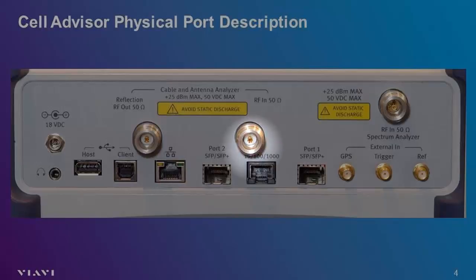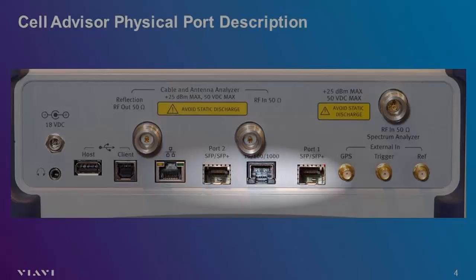Two ports, labeled SFP1 and SFP2, are located at the front of the instrument. The SFP ports accept small form-factor pluggable transceivers and are used to make optical measurements on CPRI links. CPRI, or Common Public Radio Interface links, are most commonly used to connect a baseband unit (BBU) and a remote radio unit (RRU). With these ports, you can decode the radio frequency signals received or transmitted from the base station, perform signal analysis on the baseband unit transmit, and emulate a baseband unit to control and test a radio independently. The network connection port located between the SFP ports is not used at this time.